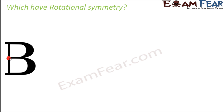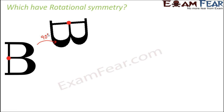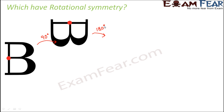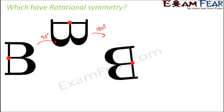Now what would happen if I rotate it by 90 degrees in the clockwise direction? So if I do that, this is the next position that I get. Is it identical to the original position? No. Let me further rotate it by 90 degrees, that means from the original position we are rotating it by 180 degrees. So from the original position at 180 degrees, you get this shape. Is this identical to the original one? No.